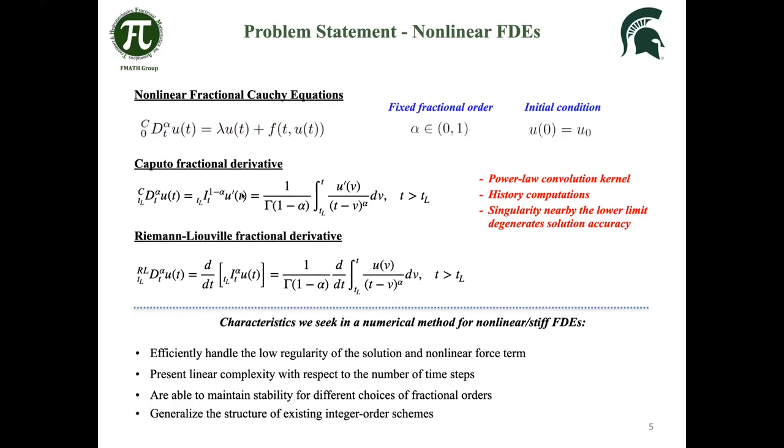This is the operator we're talking about, what we call a Caputo fractional derivative. This is a nonlocal in time operator given by this power law convolution kernel that convolutes this time derivative of the function of interest. Since this is a power law kernel, the accurate evaluation of this operator for numerical methods involves long-term history computations over your entire time integration domain. Also, we have a weak singularity nearby the lower limit of integration, and this tends to govern the solution accuracy of many existing numerical methods.